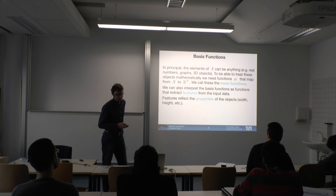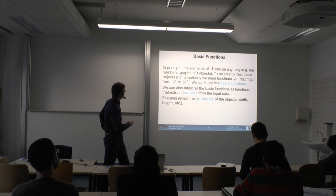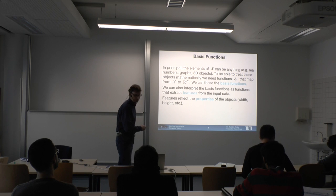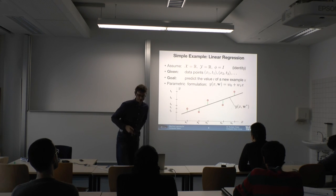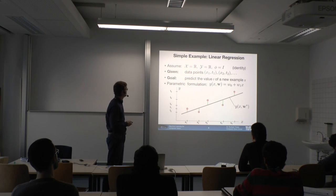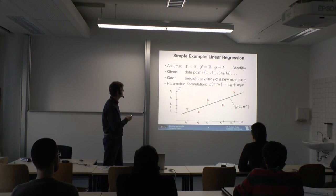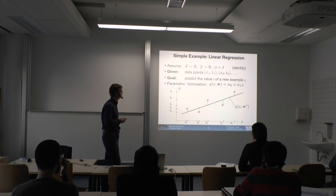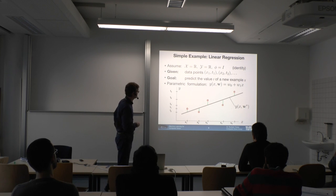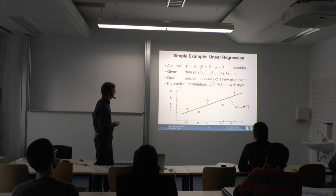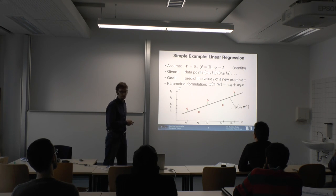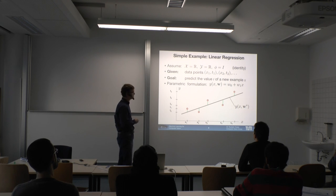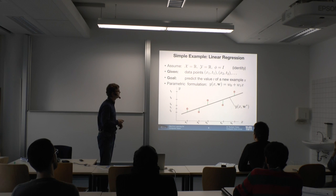We can also interpret these basis functions as features — for example, width and height of objects. Let's start with a very simple example. We have some data points in red on a real axis, and our output data is a continuous set. The problem is to find a mapping from X to the Y space given our data. The model we find should explain our data in the best way, and we need to decide what 'best' means — how can we say what is a good mapping?